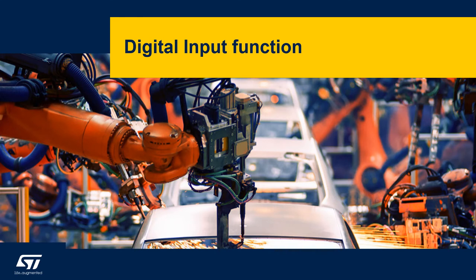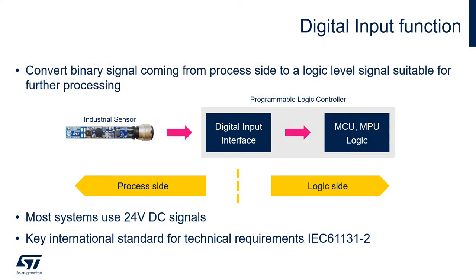Let's review what is the main function and what are the characteristics of a digital input. The key purpose of the digital input interface is to convert binary signals coming from the process side to the logic level signals on the right side. Typically, a signal with two levels and a nominal magnitude of 24V DC comes to the PLC digital input periphery, where it is evaluated and translated to 3.3V, eventually to 5V logic levels, and then further processed by MCU or some other application-specific circuits. Several characteristic types have been specified in the IEC 61131-2 standard to ensure compatibility between external signal sources like industrial sensors and the input interface.